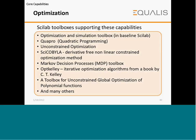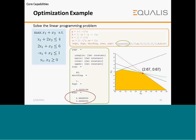SciLab toolboxes support optimization capabilities. Baseline SciLab includes an optimization and simulation toolbox. QuadProg helps in quadratic programming, and Psyco-SciLab provides derivative-free nonlinear constraint optimization methods. For a linear programming example, maximize x1 + x2 subject to: x1 + 2x2 ≤ 4, 2x1 + x2 ≤ 6, −x1 + x2 ≤ 1, where x1, x2 ≥ 0. The output gives the maximum at x1 = 2.67 and x2 = 0.67.